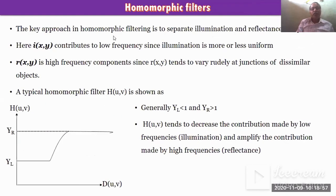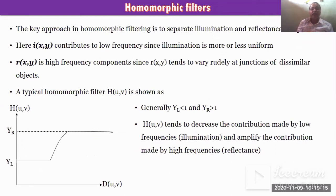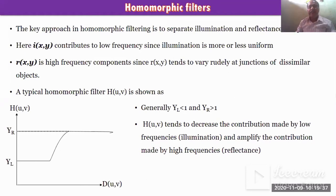The key approach in the homomorphic filter is to separate the illuminance and reflection components. i(x,y) contributes to the low frequency since illumination is more or less uniform, whereas r(x,y) is a high frequency component since reflectance tends to vary sharply across object boundaries. So i(x,y) consists of low frequency and r(x,y) consists of high frequency. Typically the homomorphic filter function h(u,v) is shown in a graph where low frequency and high frequency regions are separated.